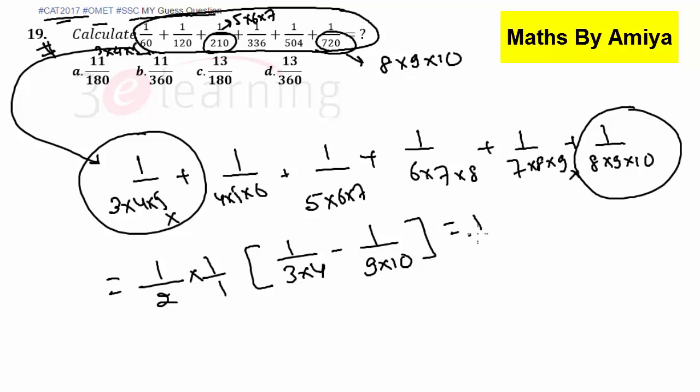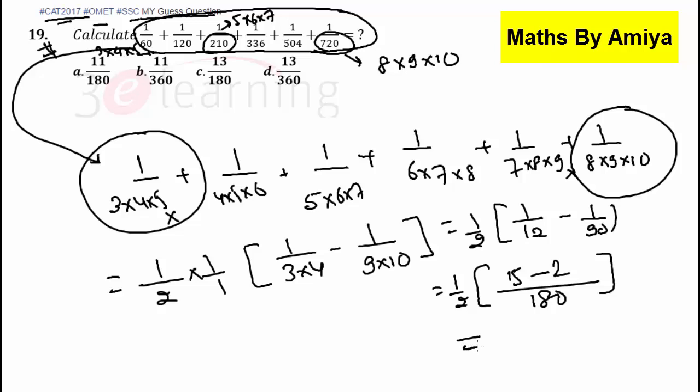So this becomes 1 by 2 into 1 upon 12 minus 1 upon 90. That is nothing but 1 by 2. LCM is 180. That is nothing but 15 minus 2. So this becomes 13. And this becomes nothing but 13 upon 360. And this is our answer.